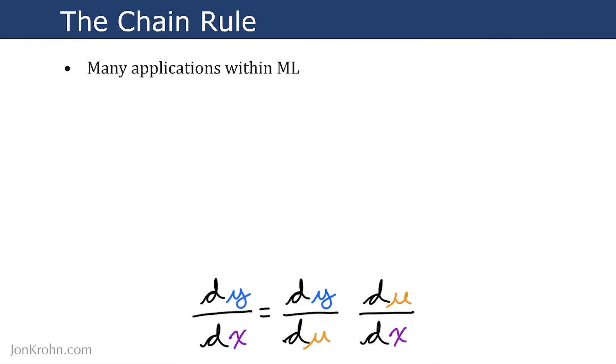The chain rule has many applications within machine learning. It's used for gradient descent in general,